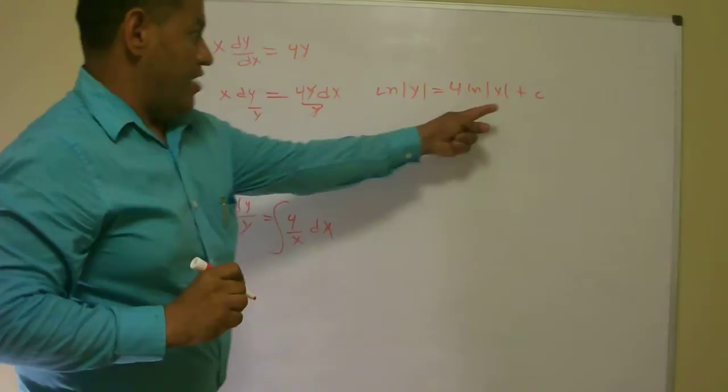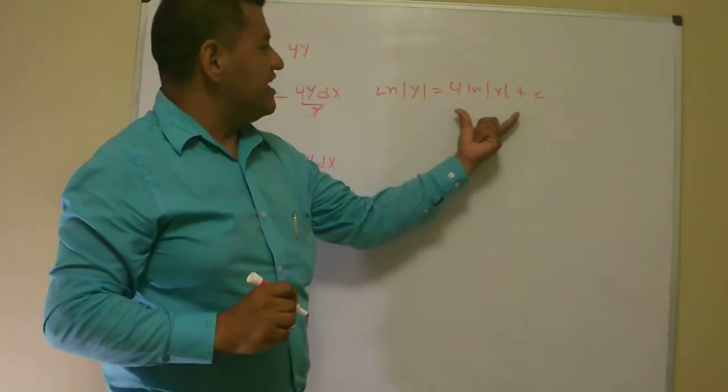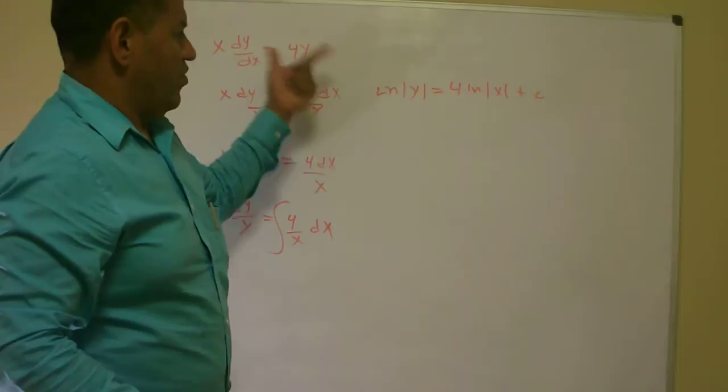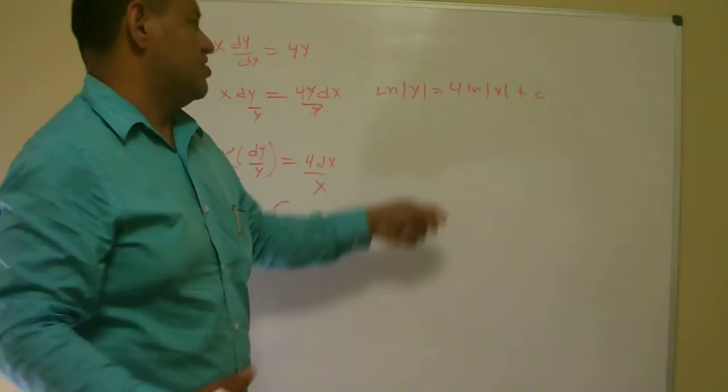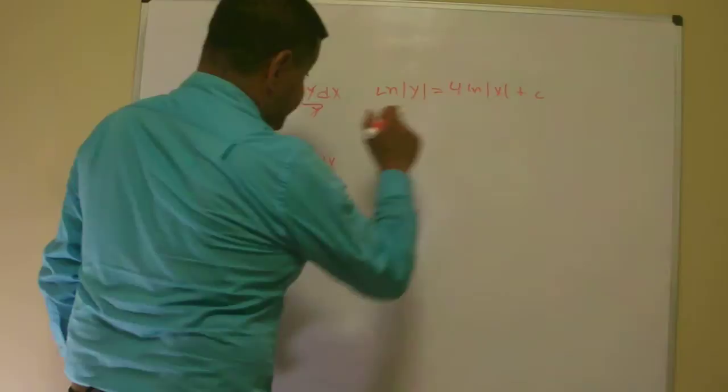I get ln absolute value of y equals 4 ln absolute value of x plus c. Notice that I only keep 1 c, I should have 1 c on this side, but I only keep it on this side because it is only a constant. A constant plus a constant is a constant, so you only keep 1 to make it simple, to make it easier.